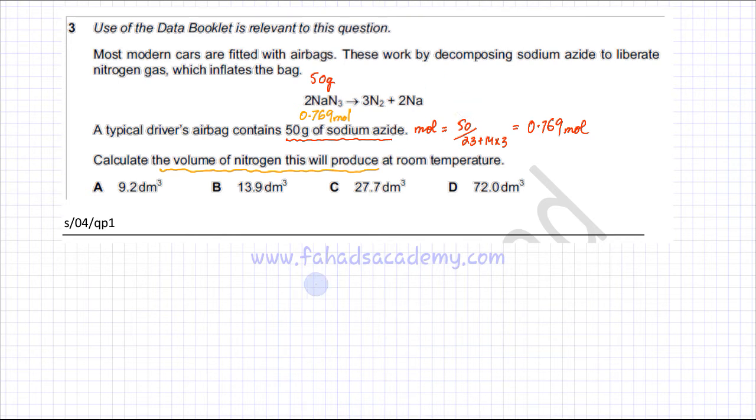NaN3. I'm going to do this calculation down here. NaN3 and nitrogen. The ratio in which they're reacting is 2 ratio 3. 2 NaN3 produces 3 nitrogen molecules.